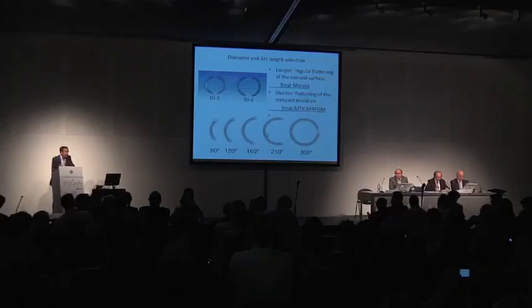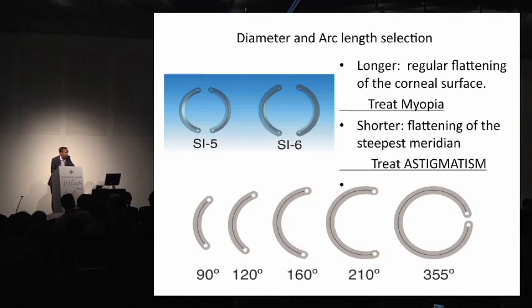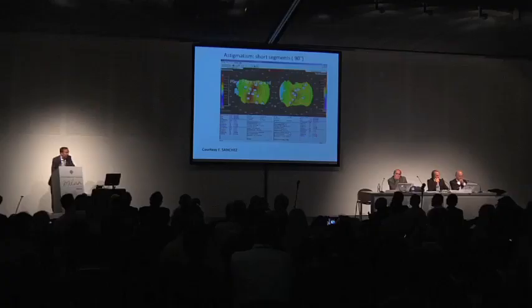The longer the ring, the more regular flattening on the corneal surface. With long arc lengths, like 210 degrees, we treat mainly myopia. With shorter rings, we mainly treat astigmatism, as shown regarding the effect on the opposite meridian. If we consider the arc lengths: the shorter the rings, the less effect on asphericity and keratometry, but high effect on cylinder. For longer rings, we have an important effect on asphericity and especially on Q values and keratometry values, but almost no effect on cylinder.